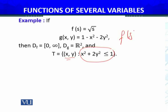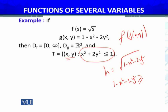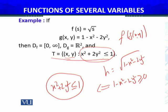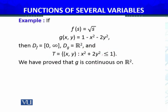For f(g(x, y)), the composition function h will be √(1 − x² − 2y²), so we require 1 − x² − 2y² ≥ 0. We have proved that g is continuous on ℝ². Now, by using the composition theorem — the continuity of composite functions discussed in the last module — we proceed.